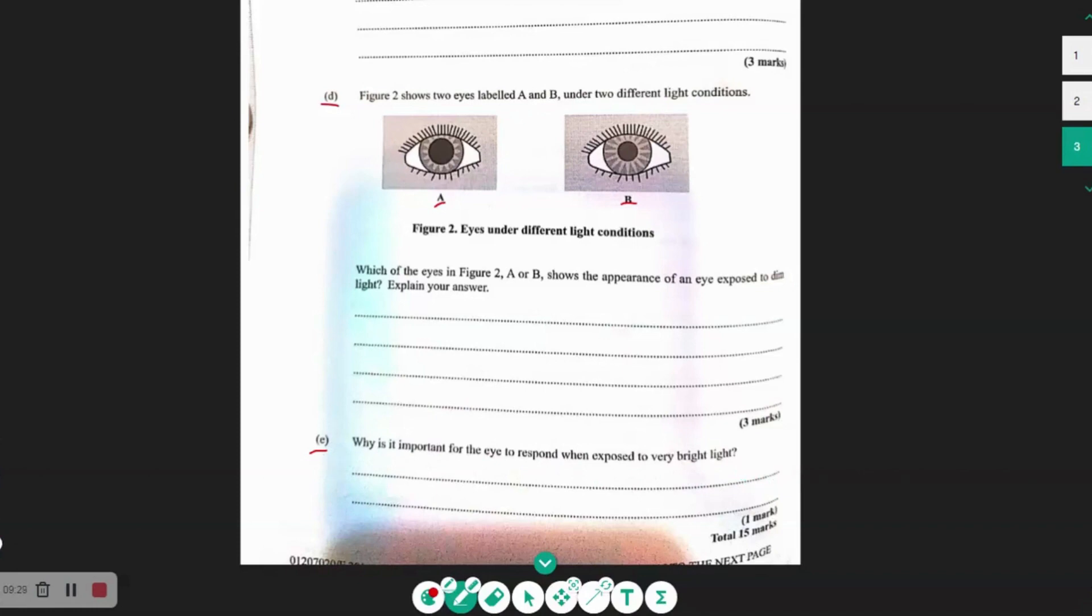And that actually answered this last part here, which is why is it important for the eye to respond when exposed to very bright light. So that's what I just said there. We don't want too much light entering the eye to damage the cells or the sensitive cells that are there at the retina.